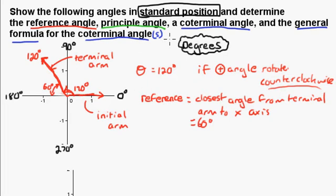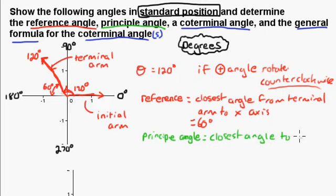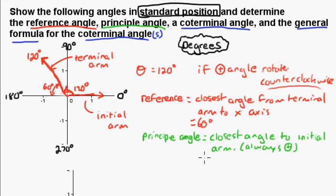The principal angle is always the closest angle to the initial arm, and this angle is always positive. So you rotate in the positive direction from the initial arm to the terminal arm. In this case, the principal angle is from the initial arm all the way to the terminal arm, which is 120 degrees.